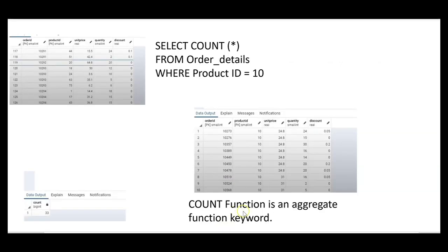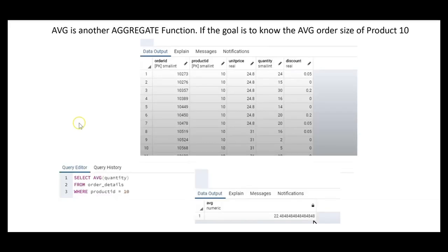Going back to the COUNT function — we determined there were 33 orders that involved product 10, but not every customer ordered one. Here's an order of 24 product 10s, here's an order of 15. What if we wanted to know the average order size of product 10? AVG is another aggregate function. We write: SELECT AVG(quantity) FROM order_details WHERE product_id = 10. The average order size of product 10 is 22.48.